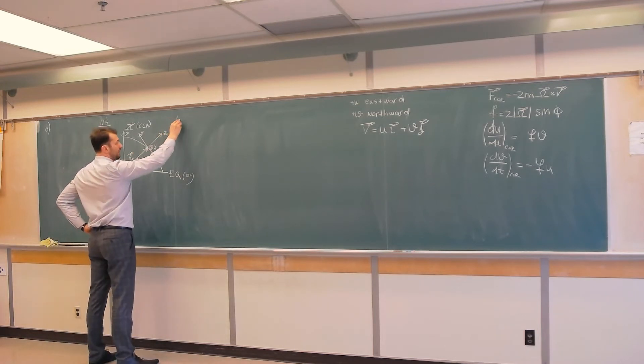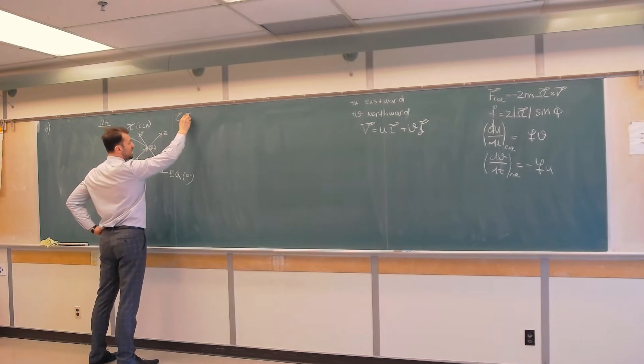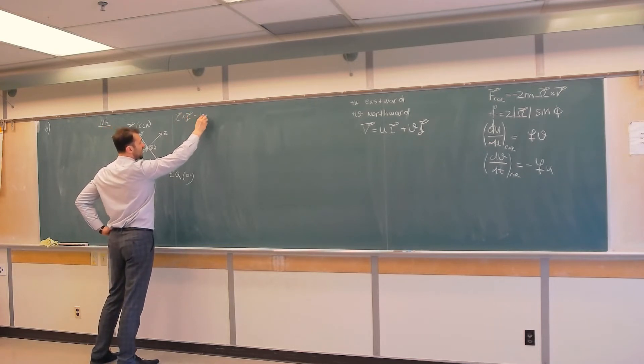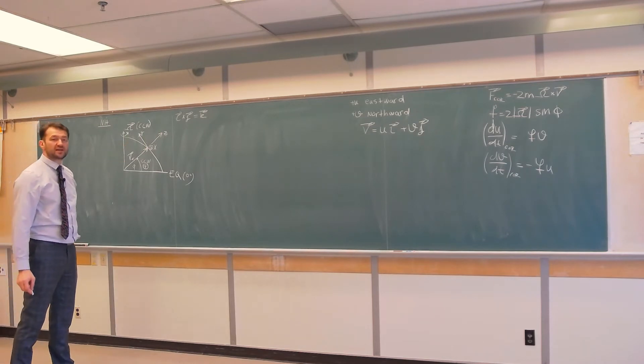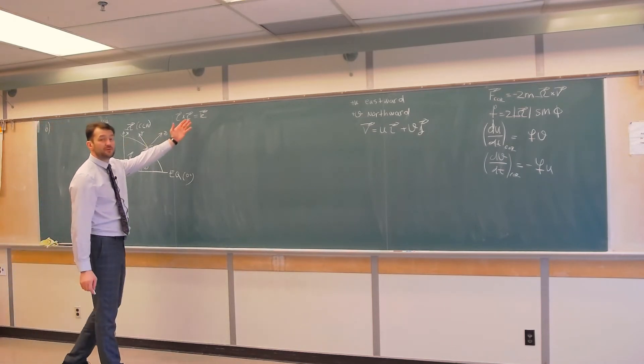Namely, i cross j equals k is the definition of right-handed coordinate system. I have videos explaining that.